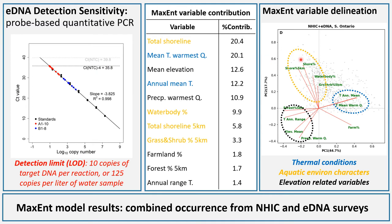If we do a principal component analysis on those variables, we can group them into three major categories. The first is thermal conditions, which include mean annual temperature and mean temperature of the warmest quarter, which is summer. The second is aquatic environment characteristics, including prevalence of shorelines, prevalence of water bodies such as lakes, rivers, and streams, and prevalence of grass and shrub landscape related to transition zones between land and aquatic environments. Finally, we have elevation-related variables, including forest prevalence, annual temperature range, and precipitation of the warmest quarter.